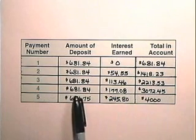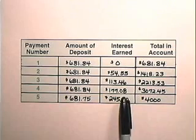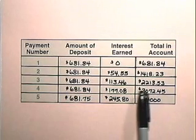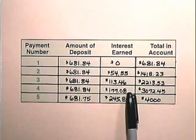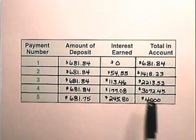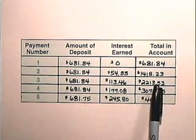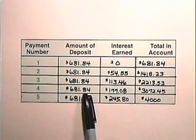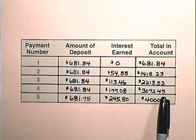The fourth year a deposit is made of $681.84. The $177.08 is the interest on $2,213.53. That's $2,213.53 multiplied times 8%. And at the end of the fourth year we have $2,213.53 plus $681.84 plus $177.08 giving us $3,072.45.